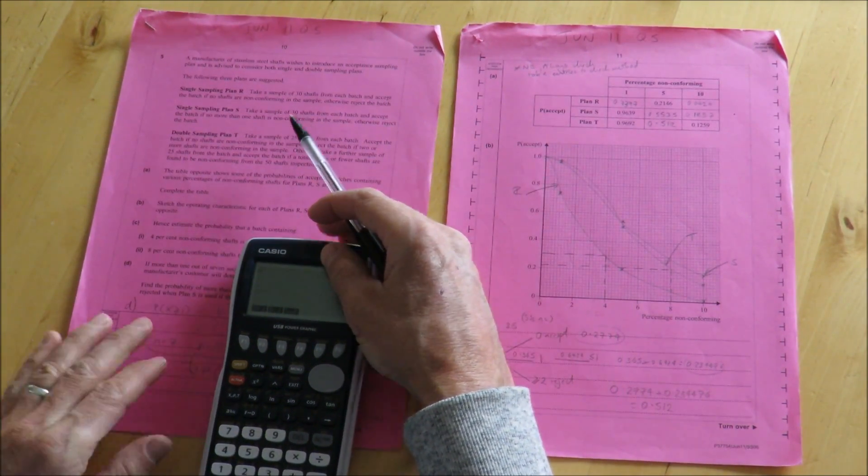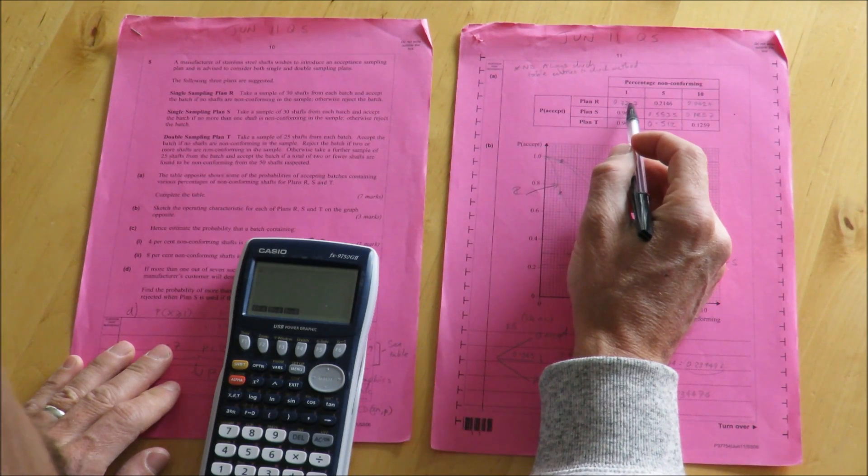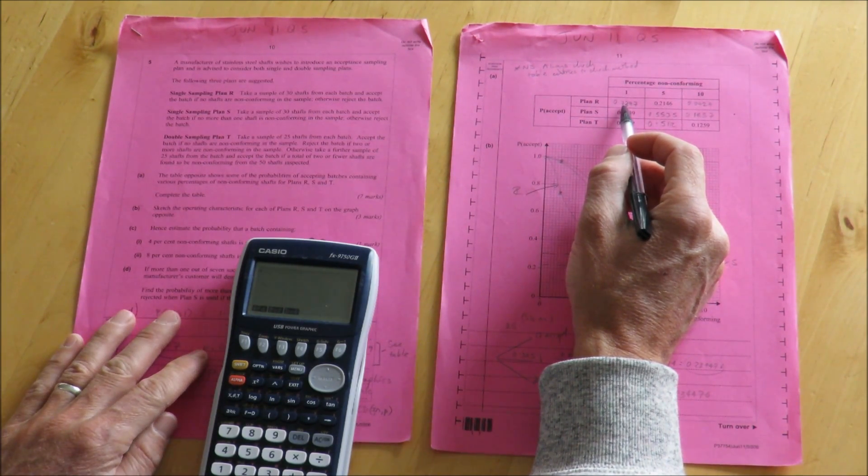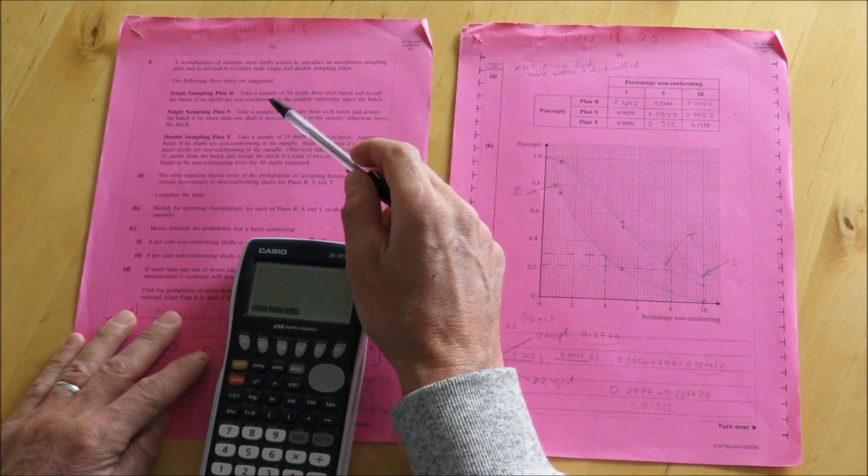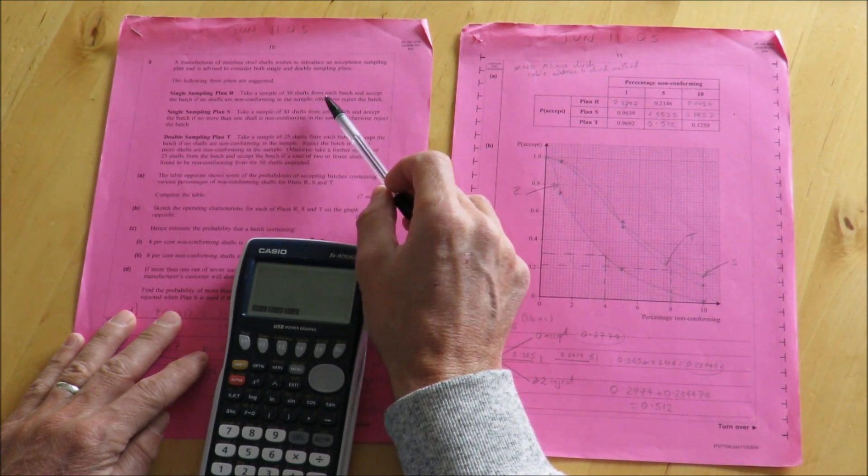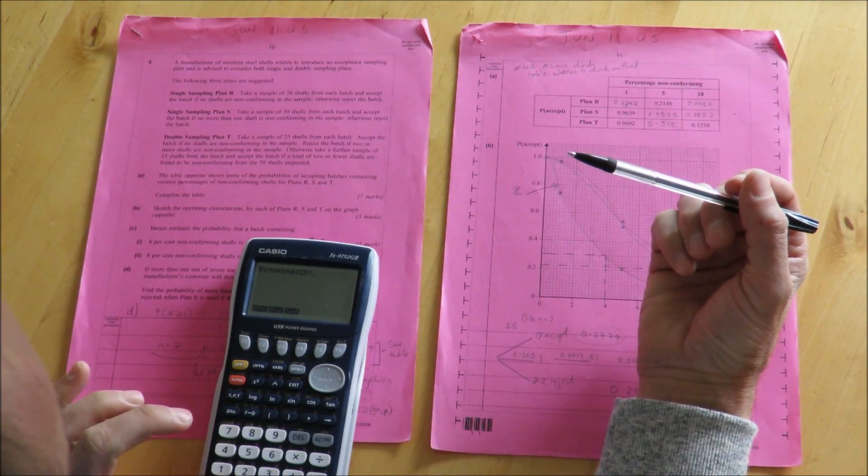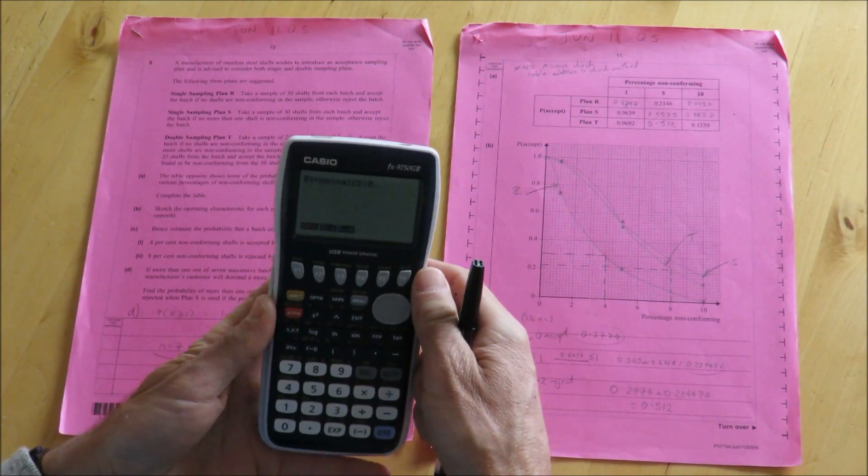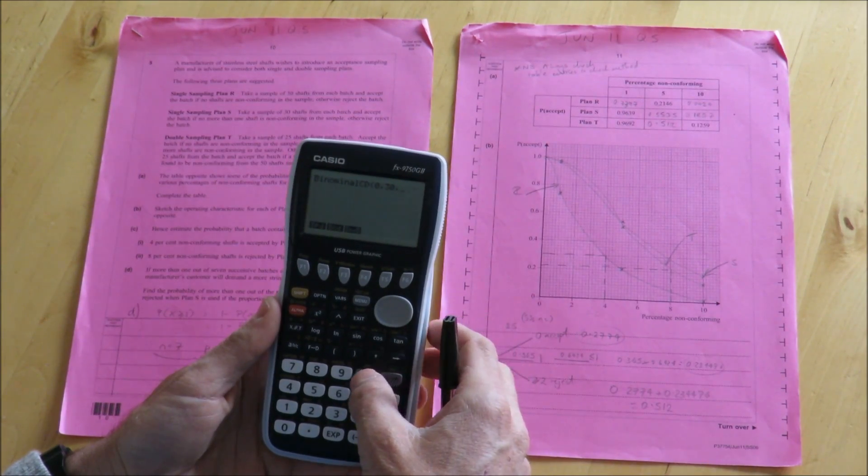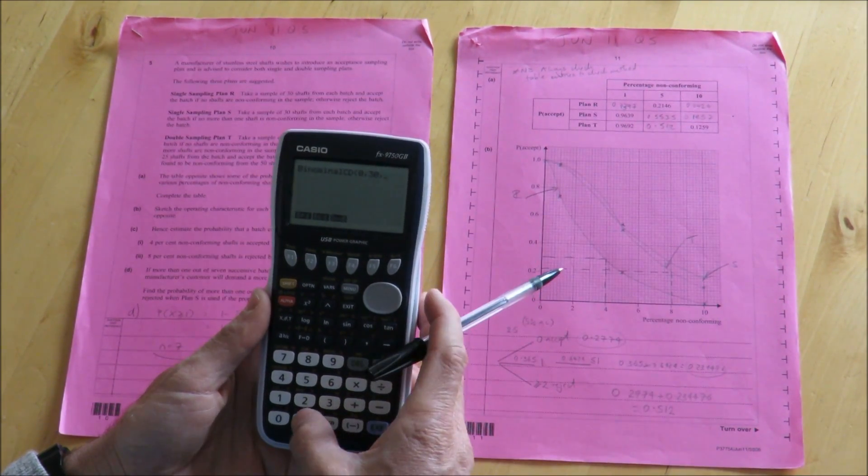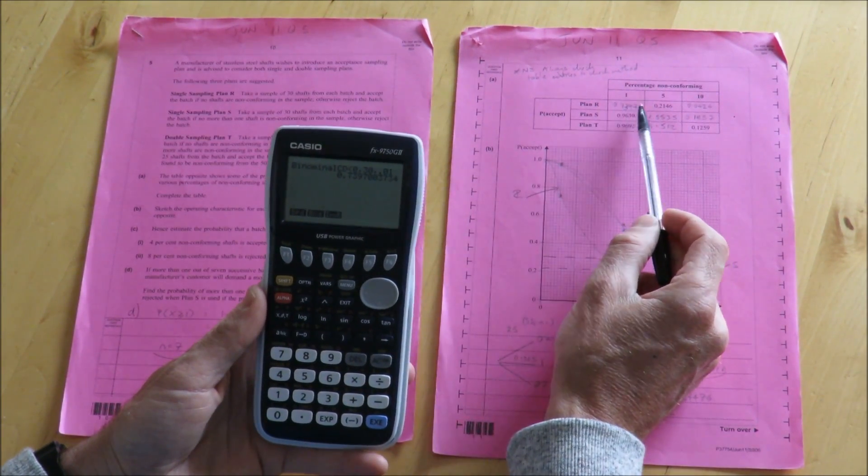This is for single sampling plan R. Single sampling plan R has one percent in this particular entry of steel shafts non-conforming, and the sample size is 30. So what we need to do here, the sampling plan is that the plan will be accepted if no shafts are non-conforming. So I'm going to press BCD. I want no shafts to be non-conforming. The number in the sample is 30 for that first plan, and the percentage of non-conforming items is 1%. So I need to be careful to put that in as 0.01, and there's my 0.7397, which comes up here in the table.